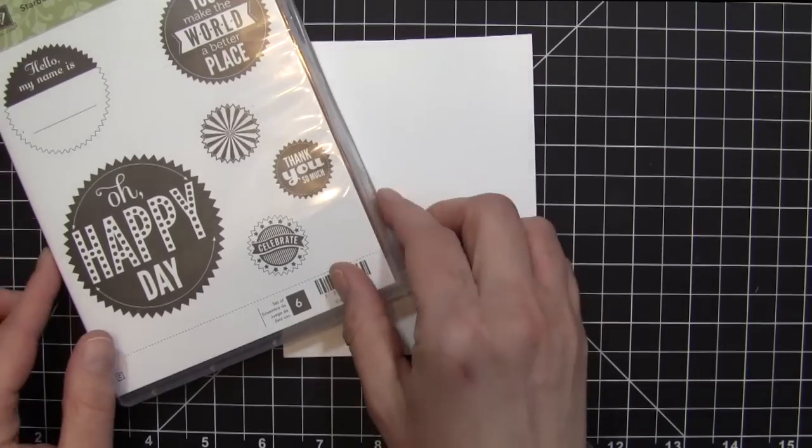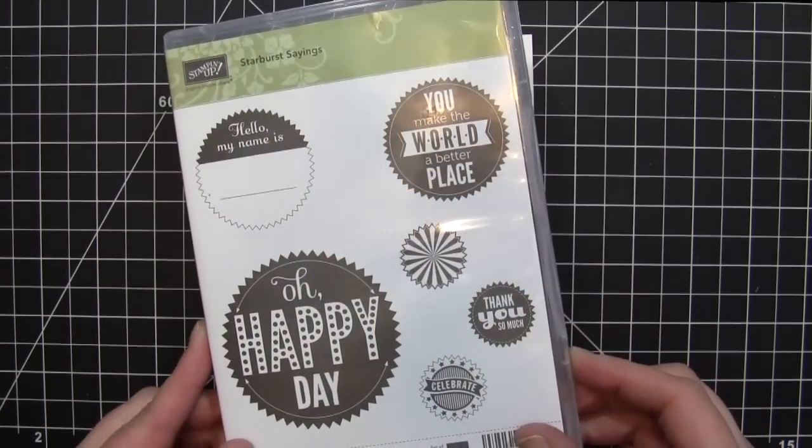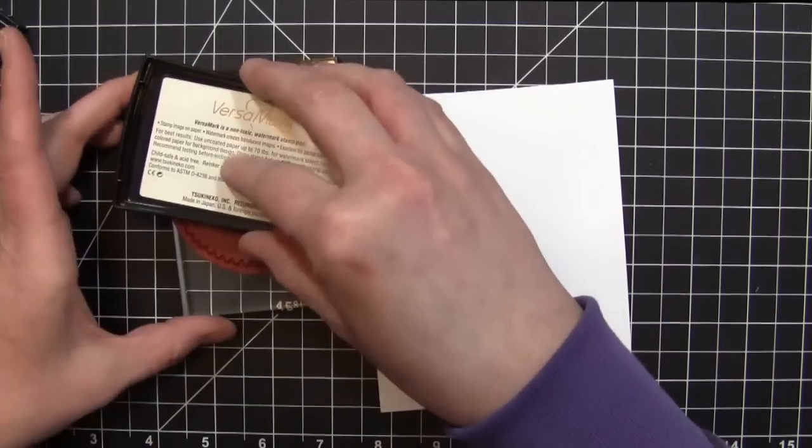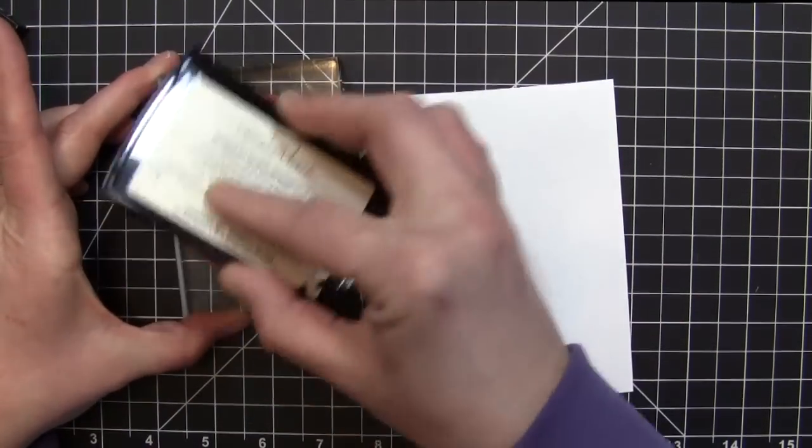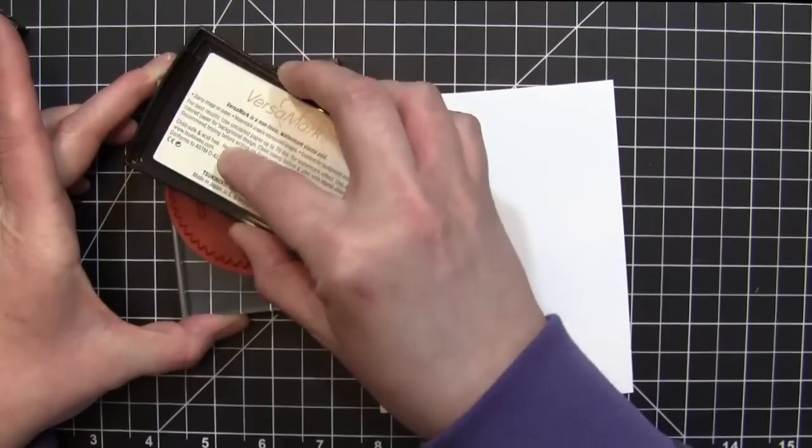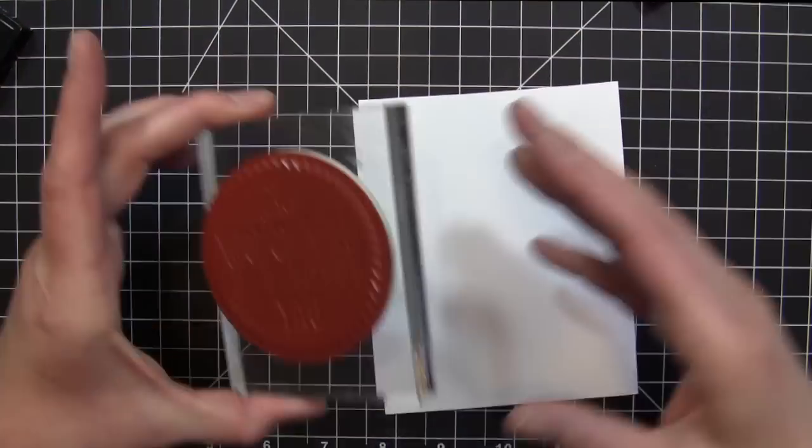Hey everybody, welcome back to What's Up Wednesday. Today we're making a card using the Starburst Saying stamp set and coordinating dies. I'm starting with the Oh Happy Day stamp, inking it up with Versamark ink so I can do some heat embossing.